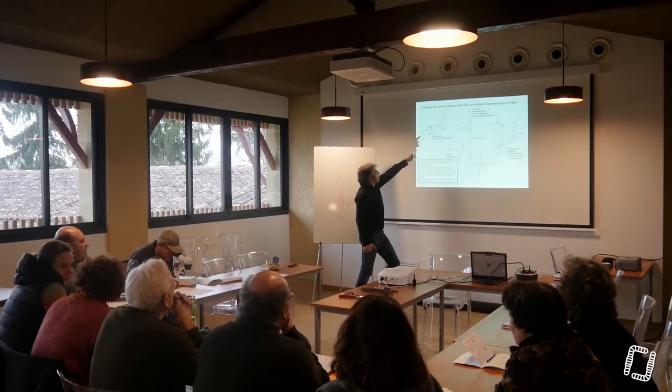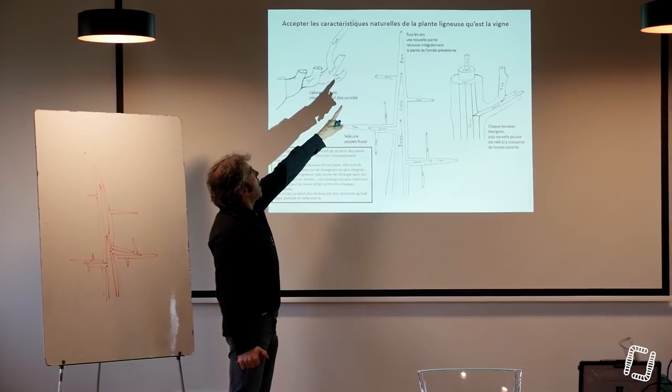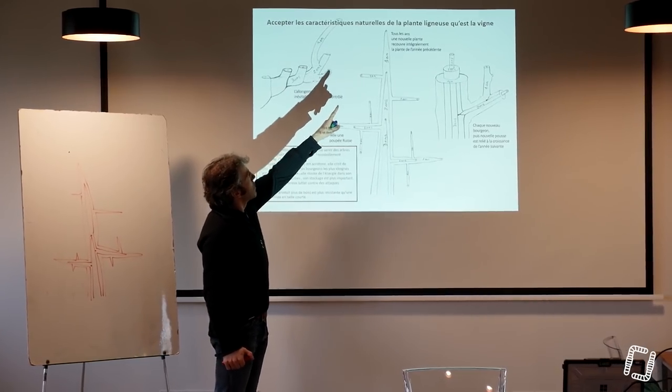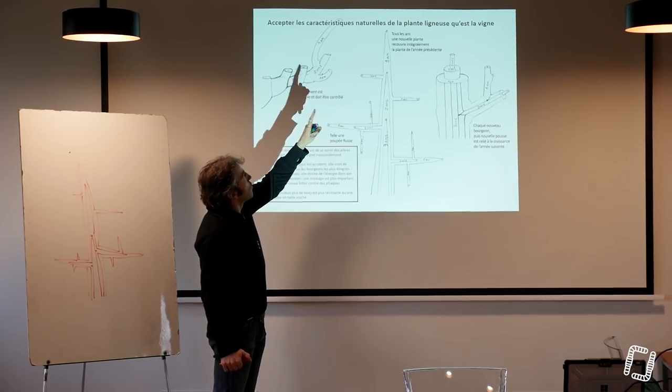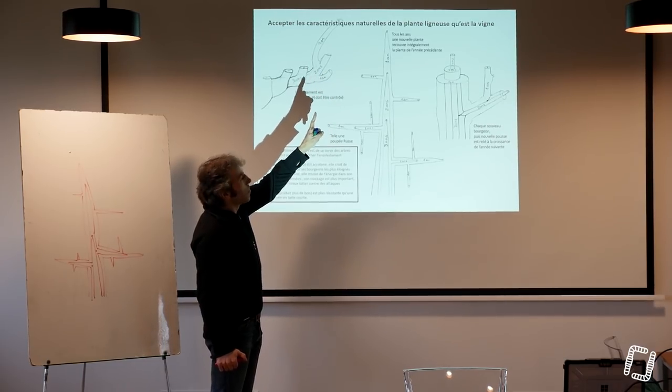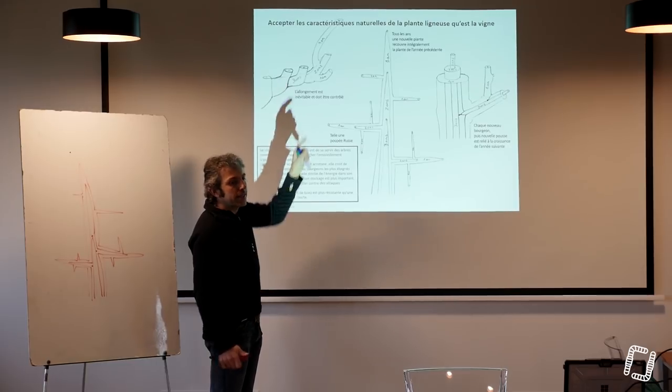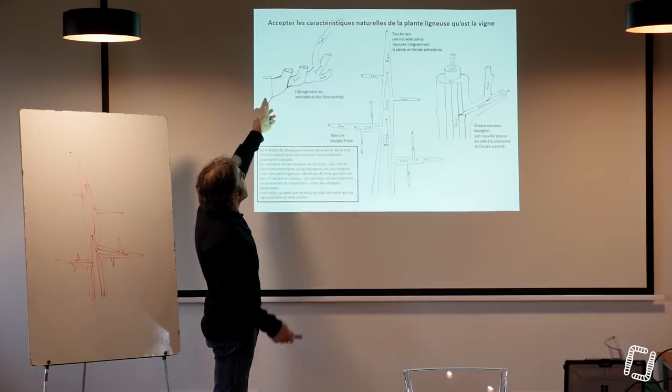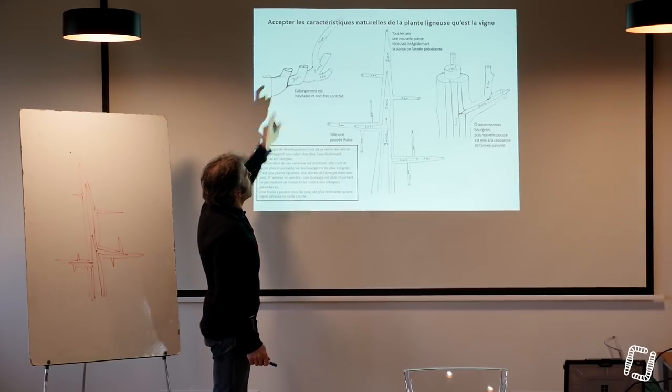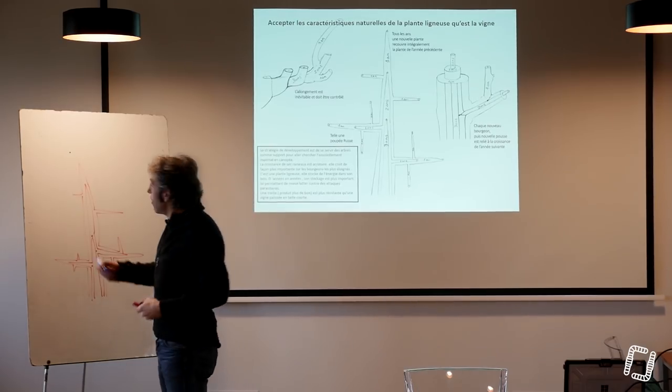Donc là, si on regarde celui-là, en fait, le vaisseau de 1 an, la pousse de 1 an, le sarment de 1 an, il est fixé sur le sarment de 2 ans, qui lui est fixé sur le sarment de 3 ans, qui est fixé. Donc ça, ça paraît simple. Mais en fait, dans le sarment de 5 ans, dans la pousse de 5 ans, on a la pousse de 3, la pousse de 2, la pousse de 1.